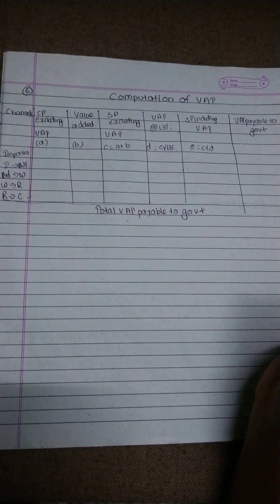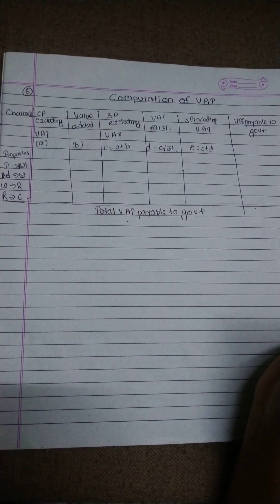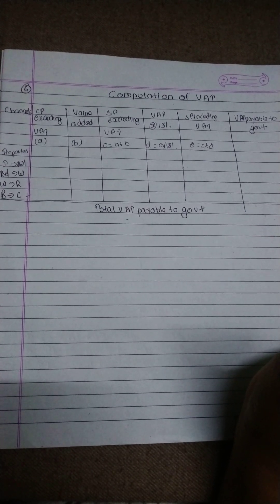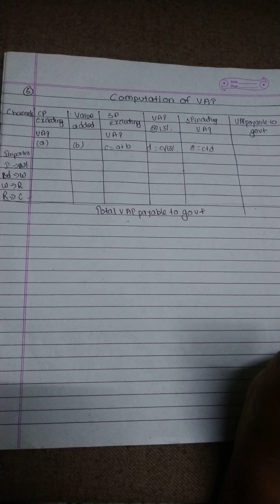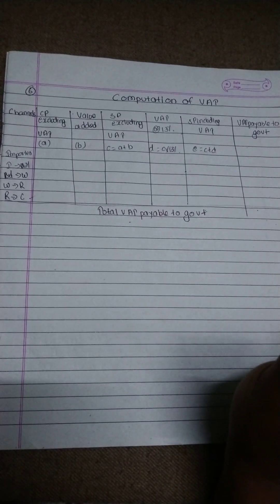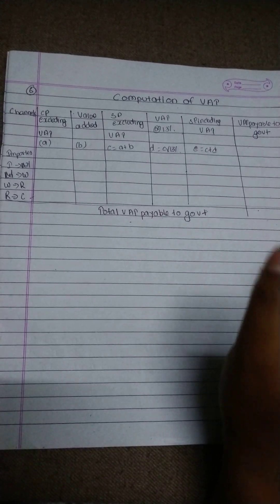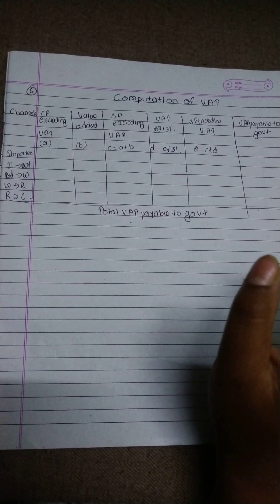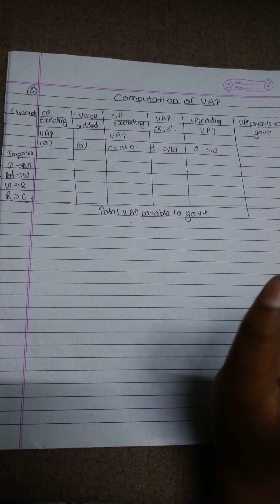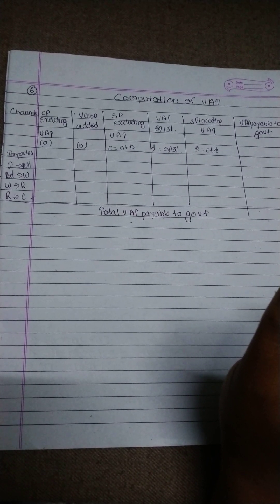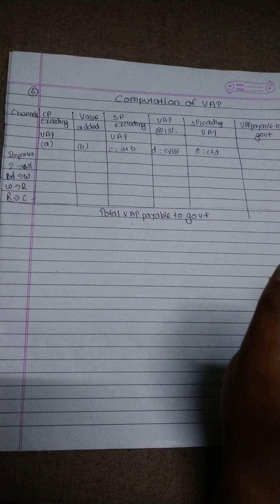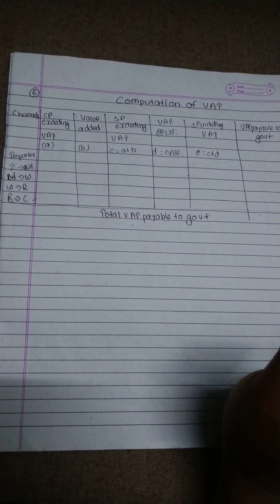CP includes or excludes BAT. Then I will write value added. CP excluding BAT equals C plus B, excluding. Then BAT — add the rate at 13%. D equals C into 13%. Then CP including BAT.